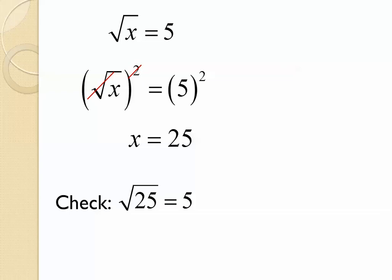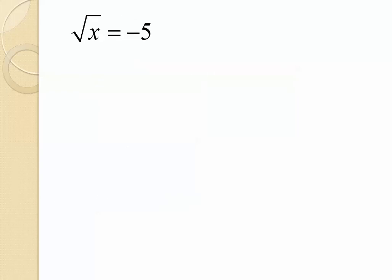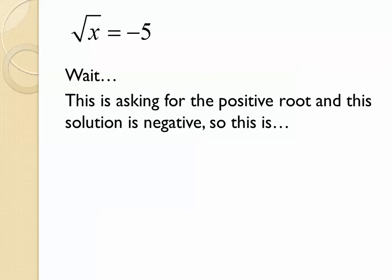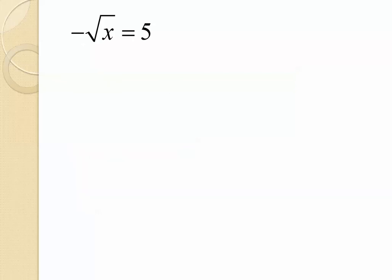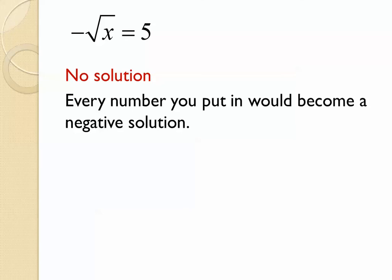How about this equation: the square root of x equals negative 5? I know you're tempted to say x is 25, but it's asking for the positive root and the solution is negative — so this is no solution. We have to pay attention to what they're asking us. If you see a positive square root asking for a negative answer, that's a no solution. The same goes for the negative square root of x equals positive 5 — that's also no solution. The notation is really important here — no matter what you put in, the answer would always be negative, and we would never get a positive 5.